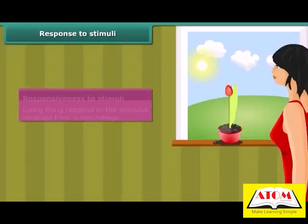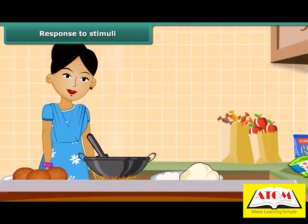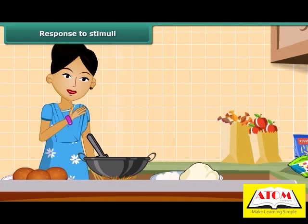When you place a plant near the window, you observe that the plant bends towards the light entering through the window. This characteristic is called responsiveness to stimuli. Similarly, when we touch a hot utensil, a spontaneous reaction is to pull our hand back. Thus, living things respond to stimuli received from their surroundings.